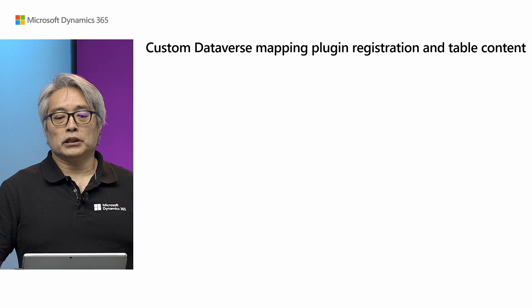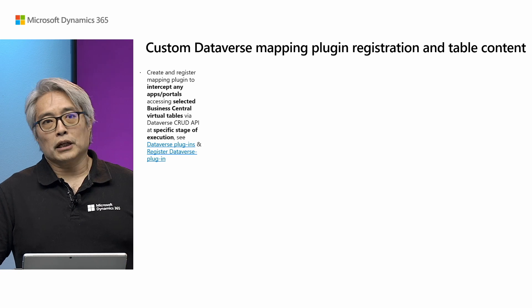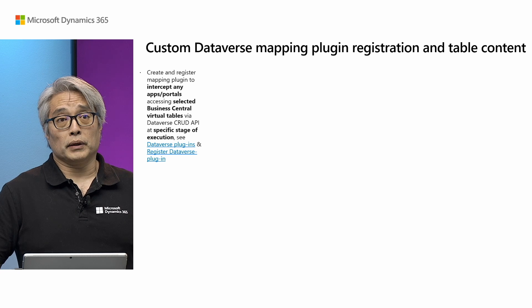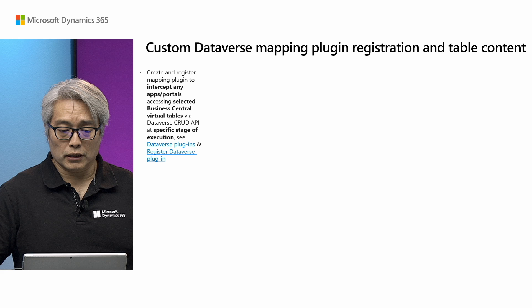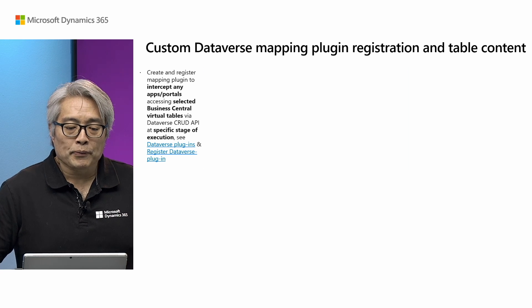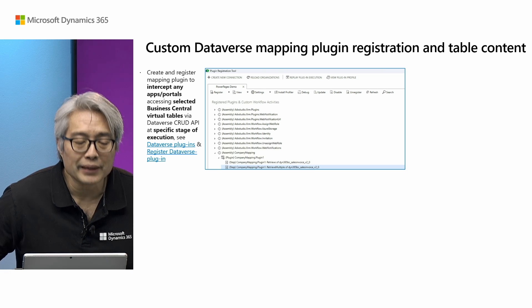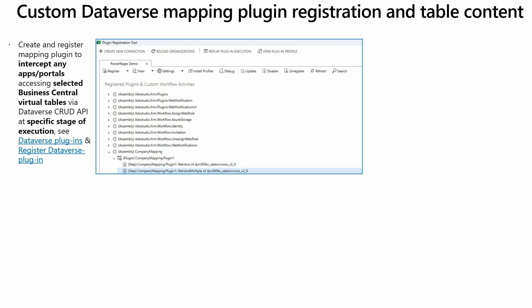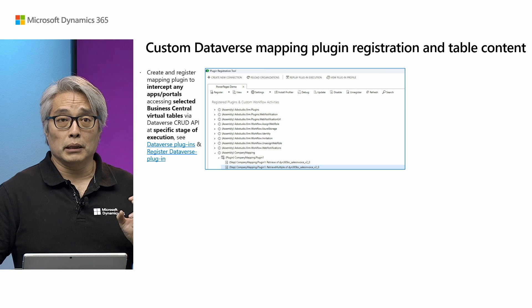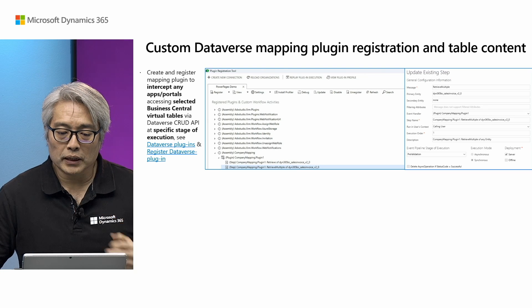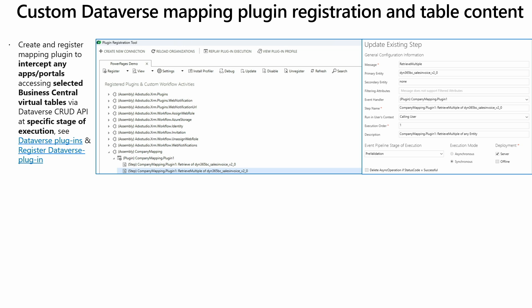To create and register this plugin and build the mapping table content, you can refer to the learning document link in this presentation from Dataverse sites, which includes Dataverse plugin documentation and how to register. In the plugin registration tool screenshot, I'm registering my company mapping plugin to intercept Retrieve and Retrieve Multiple access to the sales invoice virtual table. Whenever a site tries to read the sales invoice table virtualized in Dataverse, this plugin will be triggered. It's important to prepare the shared variable before the Virtual Table plugin uses it, so I set it to intercept at the pre-validation stage.